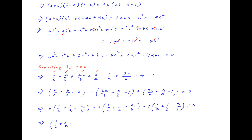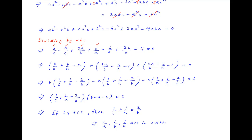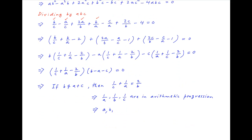Taking 1 upon c plus 1 upon a minus 2 upon b common, multiplied by b minus a minus c is equal to 0. Now if b is not equal to a plus c, then this implies that 1 upon c plus 1 upon a is equal to 2 upon b, which implies that 1 upon a, 1 upon b, 1 upon c are in arithmetic progression, and it therefore follows that a, b, c are in harmonic progression, which is the required result.